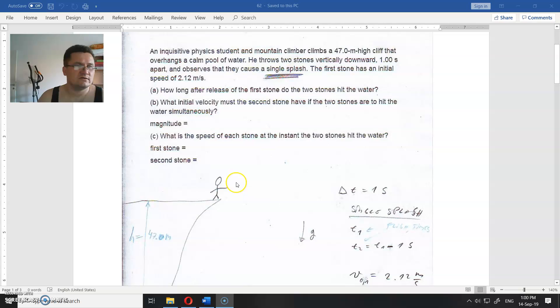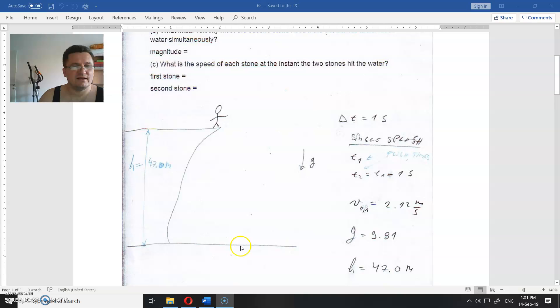The first one he throws downwards with some speed, but after one second he throws the second stone a little bit faster. Why? Because they make the splash at the same distance, hit the surface of the water at the same time. So again, the height is 47 meters.